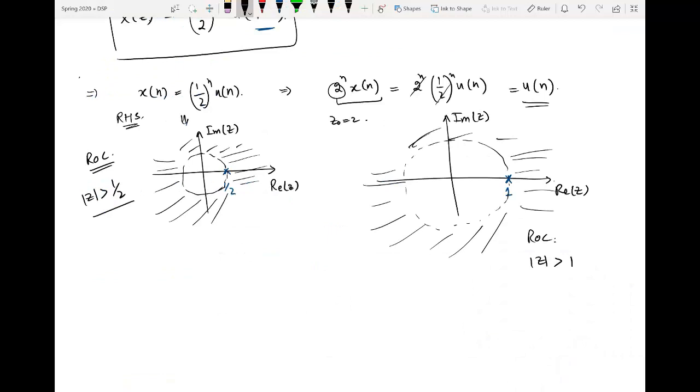The ROC—basically the previous ROC was Z magnitude greater than 1/2—so basically we multiply it with that number's magnitude to result in the changed ROC.